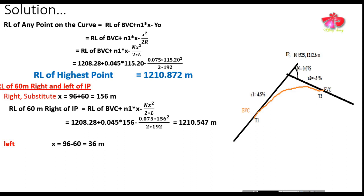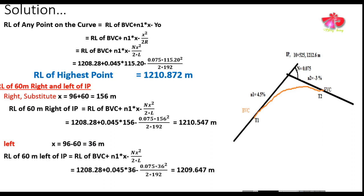For the elevation at 60 meters to the left of the intersection point, the distance from the BVC is L/2 − 60 = 36 meters. Substituting X = 36 m, the RL of the point 60 meters left of the intersection point is 1209.647 meters.